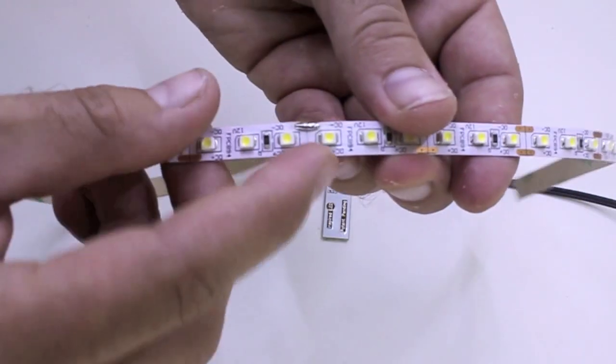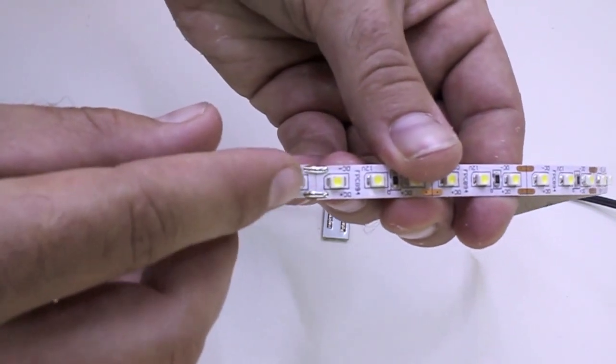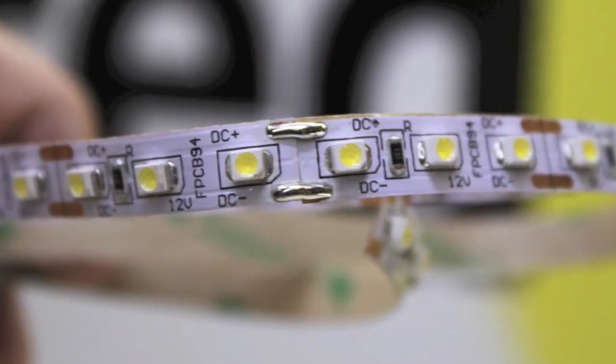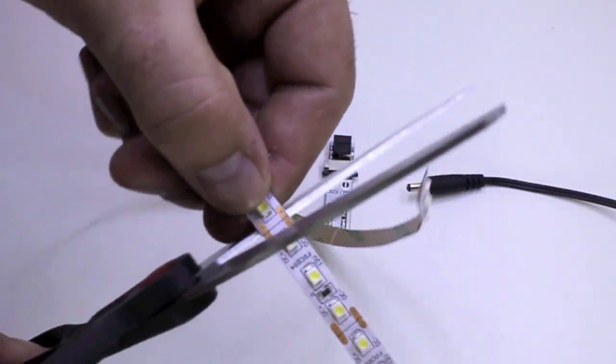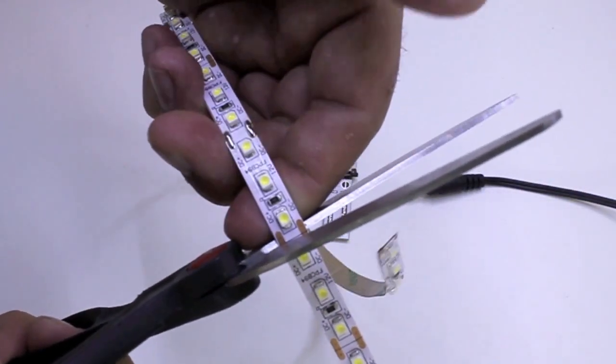When you're cutting your flex strip, make sure that you don't cut through any of the solder. If you cut through the solder, it's not going to fit into the connector. So go a few LED lights up and cut through the copper colored positive and negative.